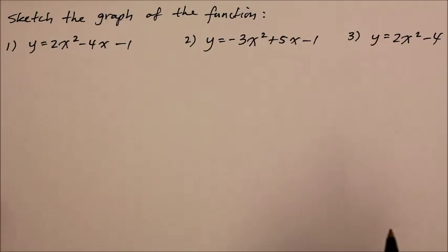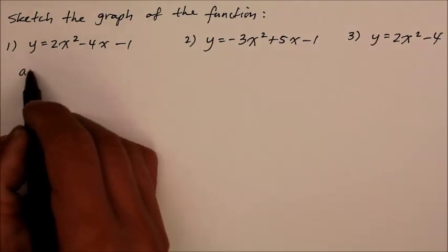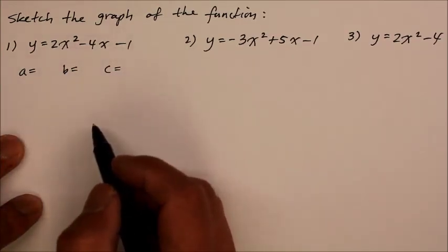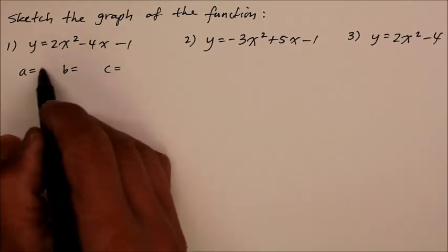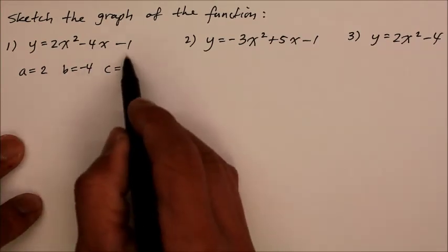So let's go ahead and use the same problems from the last instructional video. We're going to first identify a, b, and c. And since they're in standard form, we can see a is 2, b is negative 4, and c is negative 1.